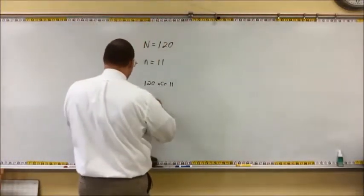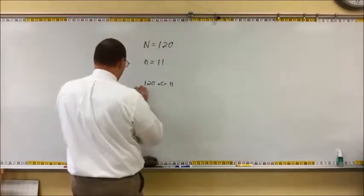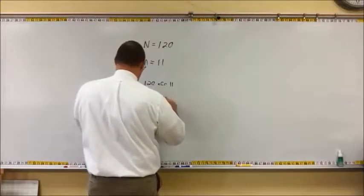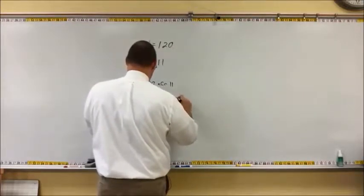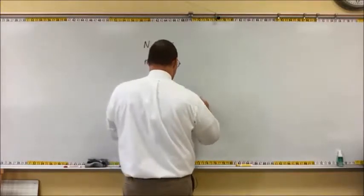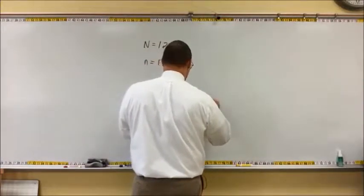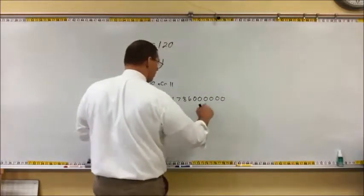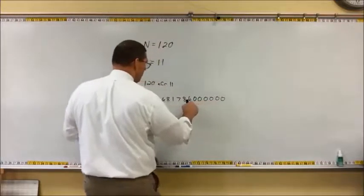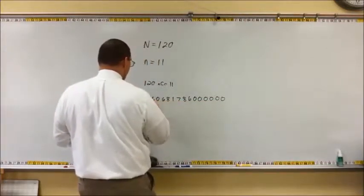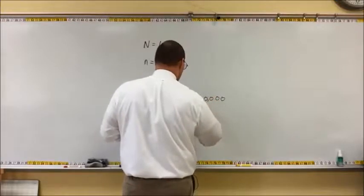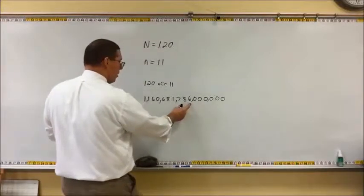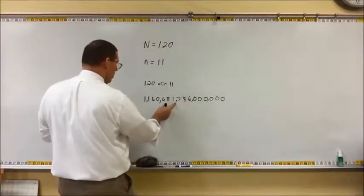Let's interpret that result. 10 to the 15th means we move the decimal 15 places, giving us a number in the quadrillions — millions, billions, trillions, quadrillions. So there are over a quadrillion different possible samples of 11 from a population of 120.